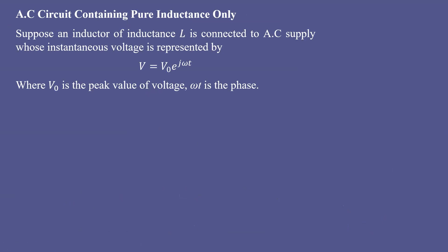Suppose an inductor of inductance L is connected to an AC supply whose instantaneous voltage is represented by v = v₀ e^(jωt), where v₀ is the peak value of voltage and ωt is the phase of voltage.